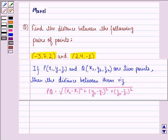Before starting with the solution, let us see the key idea behind the question. If a point P, that is (x1, y1, z1) and a point Q (x2, y2, z2) are two points, then the distance between them, PQ, is given by square root of (x2 minus x1) whole square, plus (y2 minus y1) whole square, plus (z2 minus z1) whole square.